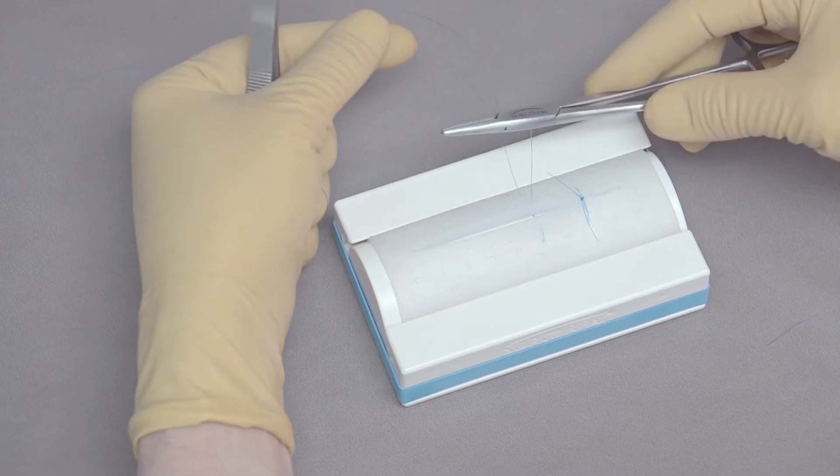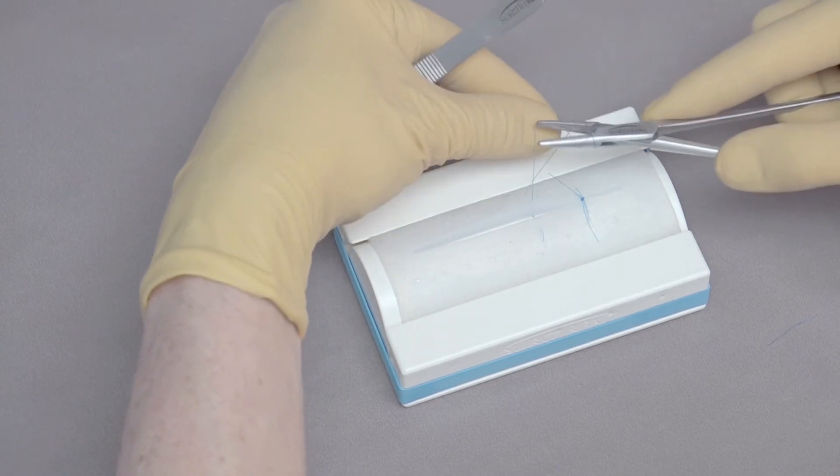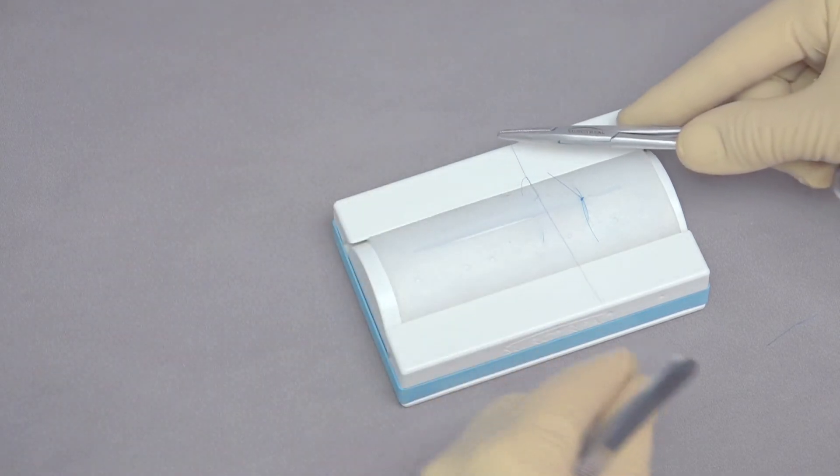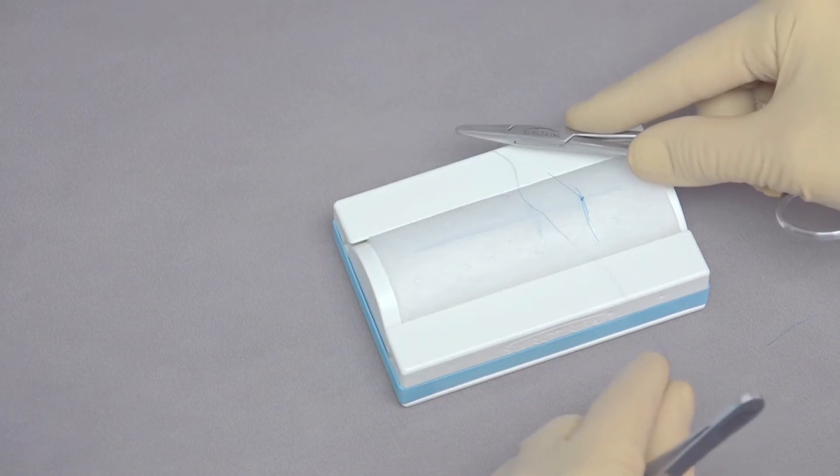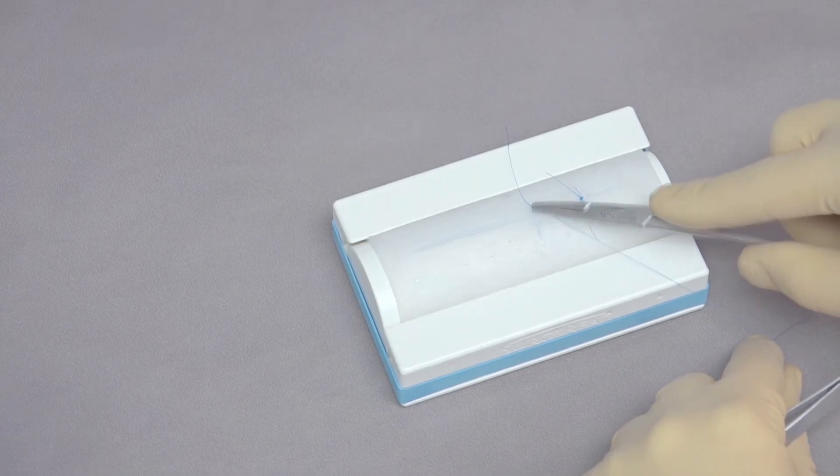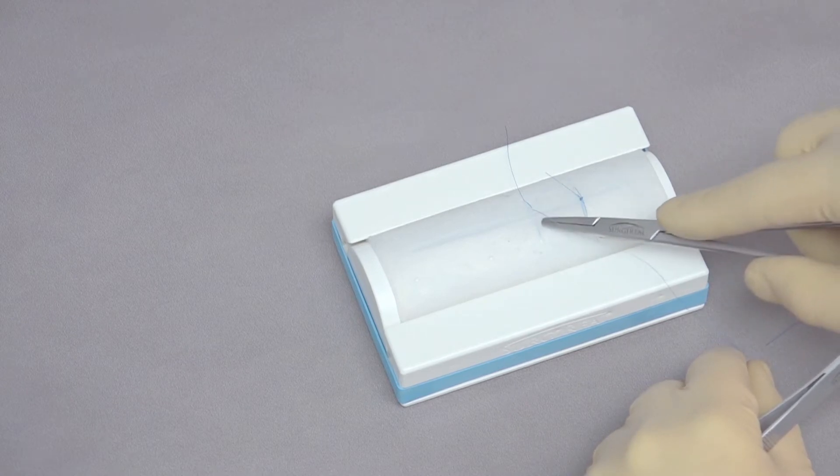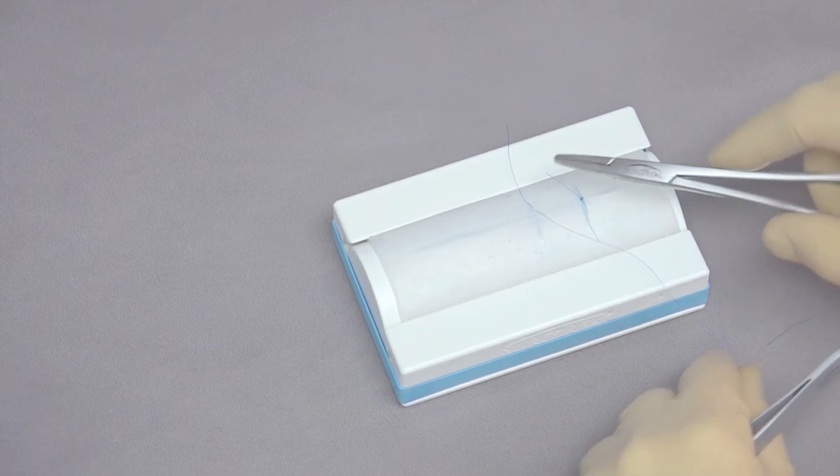We're going to again do a surgeon's throw, come around twice, grab the end, tighten down, make sure it stays flat, pull that together. You can appreciate that when we tighten the vertical mattress, the skin everts or comes out. It opposes nicely with the near far far near, and it everts with the vertical mattress.